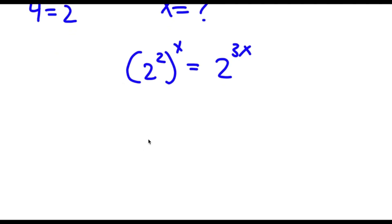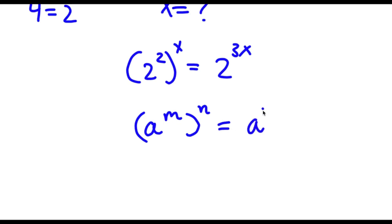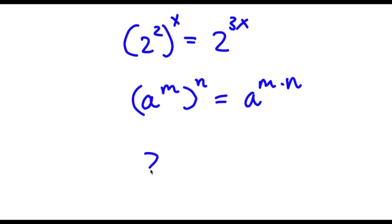Now if I have something in the form a to the power of m to the power of n, this is equal to a to the power of m times n. So 2 to the power of 2 to the power of x is going to be equal to 2 to the power of 2 times x, which is the same thing as 2x. Now this is equal to 2 to the power of 3x.